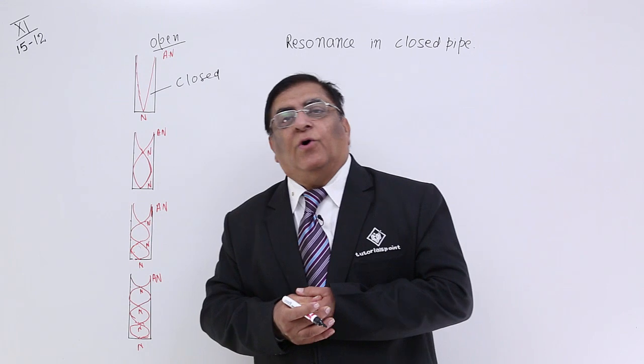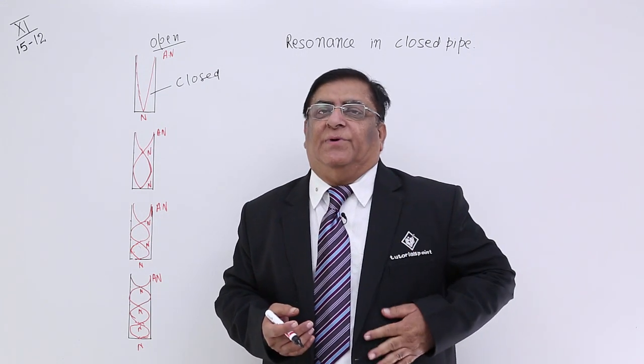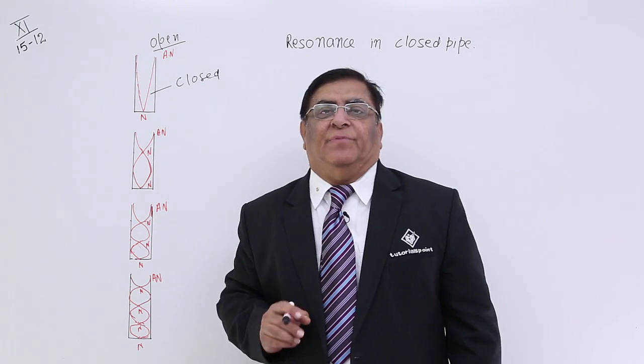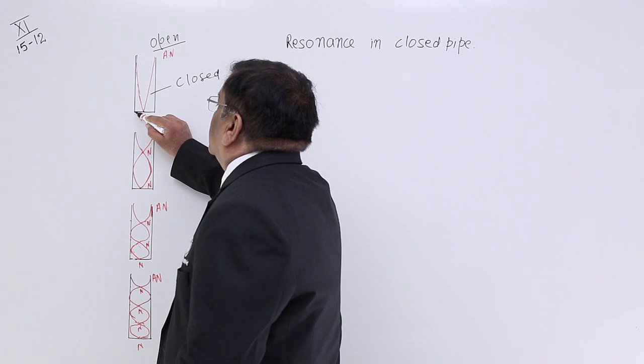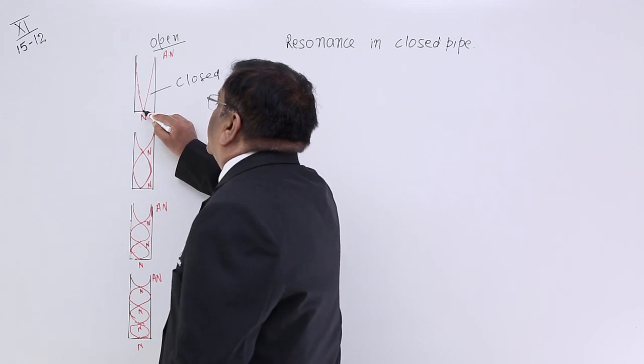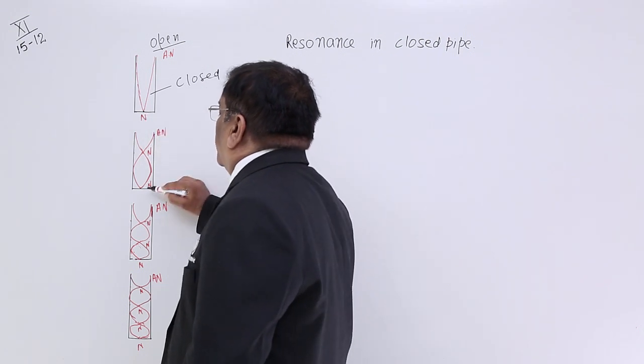Now, node is always made at a point where vibrations are not possible, where there is no freedom of vibration. And that point is here. Because this is a closed surface, there is no freedom of vibration here. So there is always a node here.